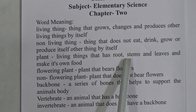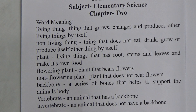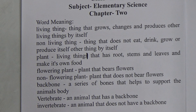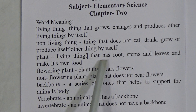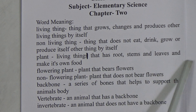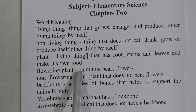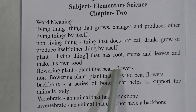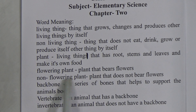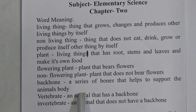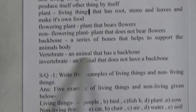Next word is 'plant': a living thing that has roots, stems, and leaves, and makes its own food. 'Flowering plant': a plant that bears flowers. 'Non-flowering plant': a plant that does not bear flowers. 'Backbone': a series of bones that helps to support the animal's body.